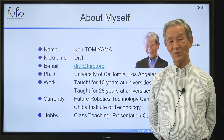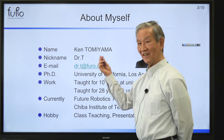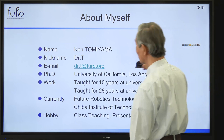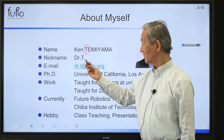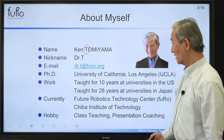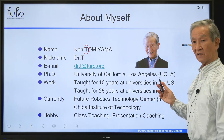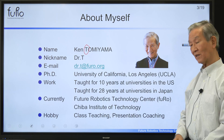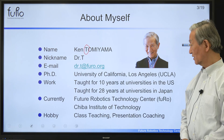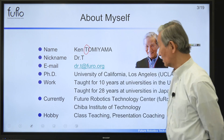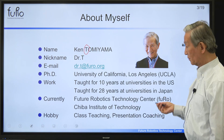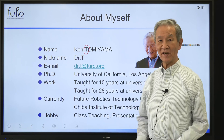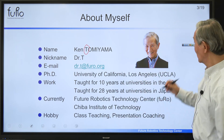First I want you to know who I am. My name is Ken Tomiyama. Is it easy to pronounce Tomiyama? Probably not. So I pick up only T, and Dr. T — that's my nickname. So please call me Dr. T. I got my PhD at the University of California, Los Angeles, UCLA. And then I taught at universities in the United States for 10 years and went back to Japan and taught another 28 years in universities. Right now I'm with the Future Robotics Technology Center, we call FURO, at the Chiba Institute of Technology. My hobby is teaching, class teaching like this one — I love it. That's why I'm making this video. And also presentation coaching — that's what I do quite often.